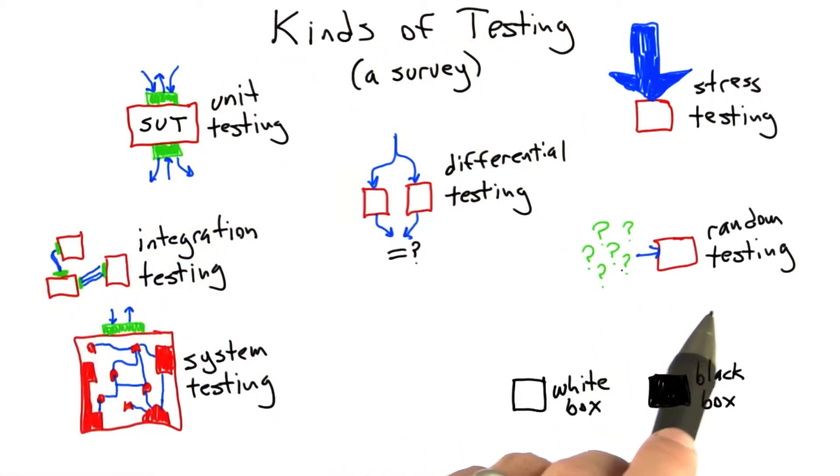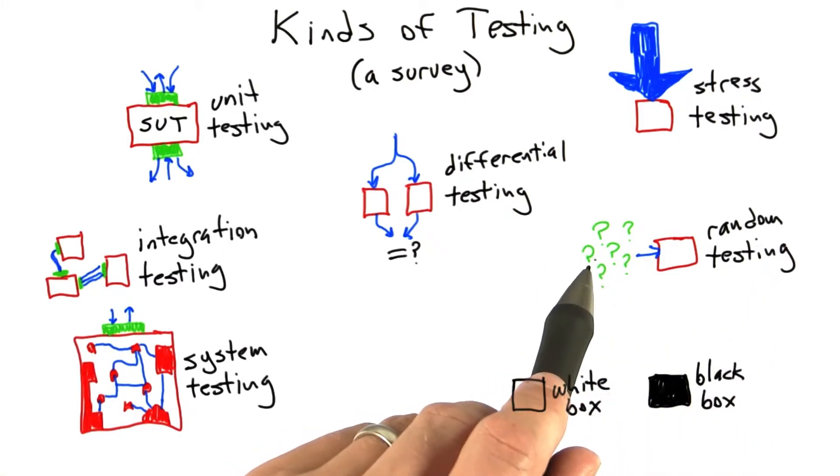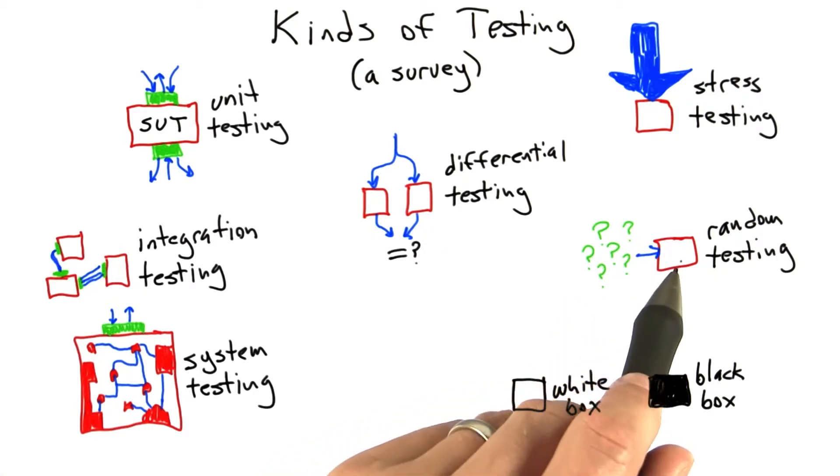Finally, we have what might be my favorite kind of testing: random testing. In random testing, we use the results of a pseudo-random number generator to randomly create test inputs and deliver those to the system under test.